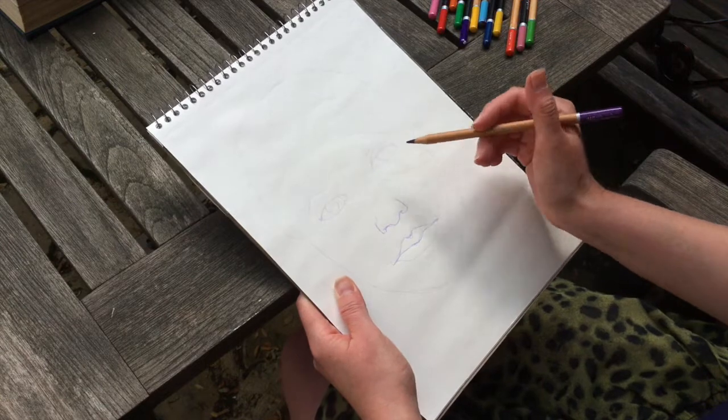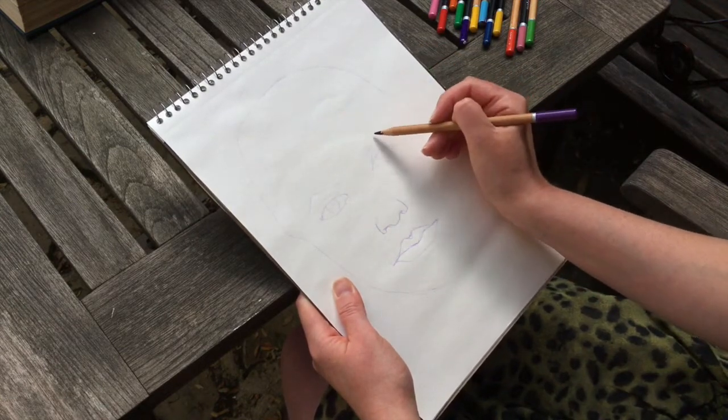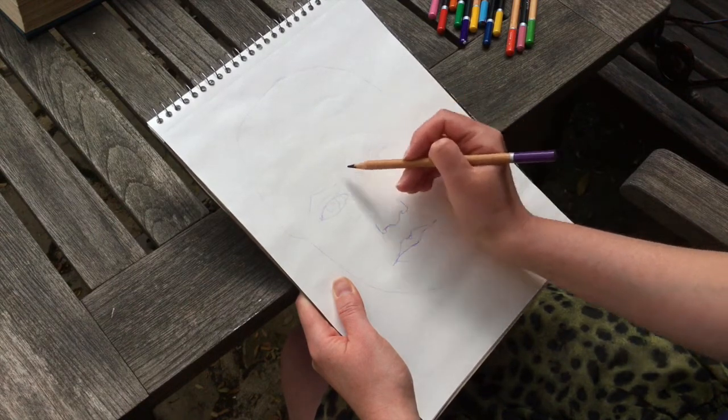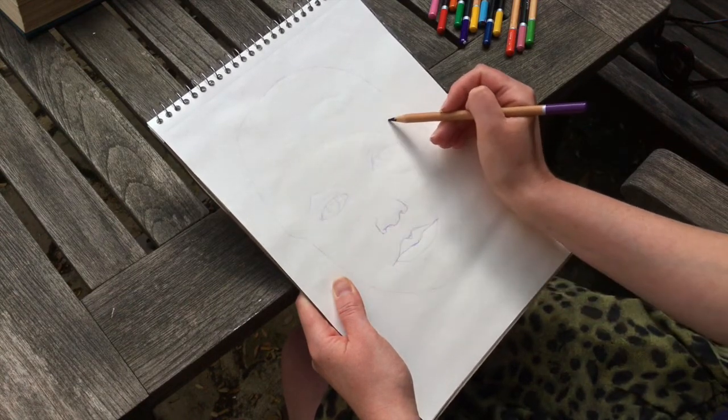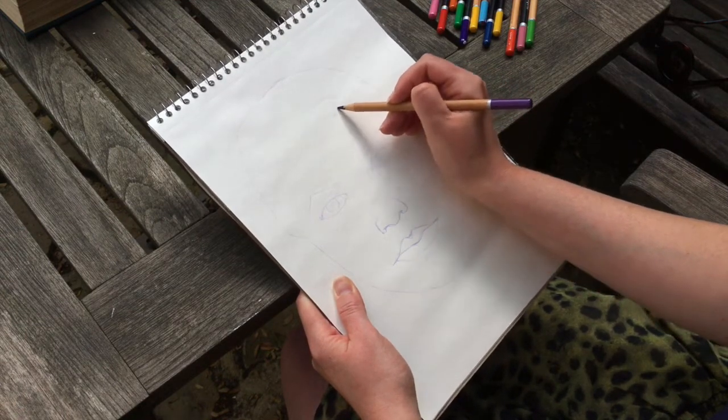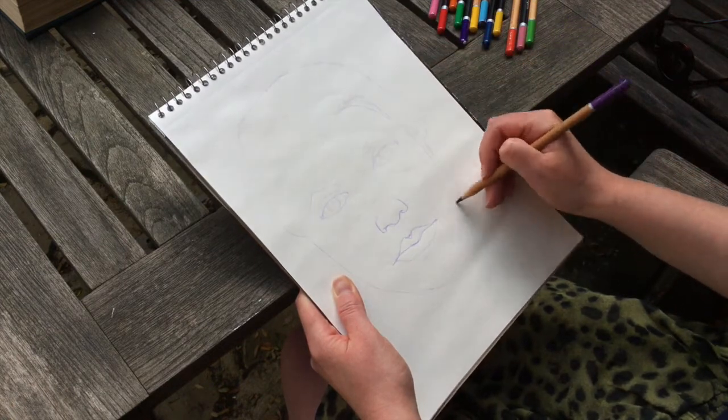And now step seven, if we draw in some of the hairline and some of the hair. So think about how big your forehead is. I'm going to draw a bit more eyebrow to help me know. And then my hair comes in like that. And think about the shape and texture of your hair. Mine's quite floppy.